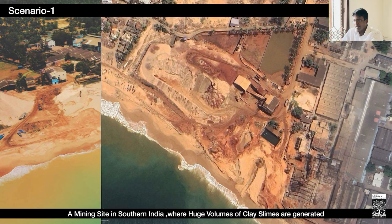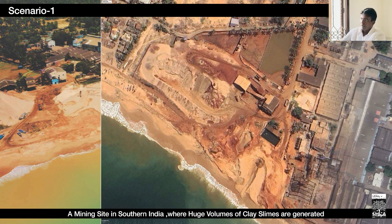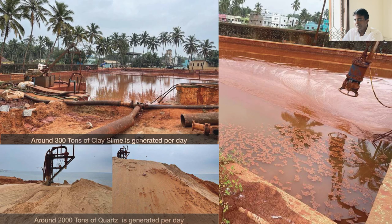The first scenario is a mining site located in southern India. There is a huge volume of slag line generated as a by-product on a daily basis. We are talking about 300 tons of waste slag on a daily basis and 2,000 tons of additional waste on a daily basis — you can see the numbers.